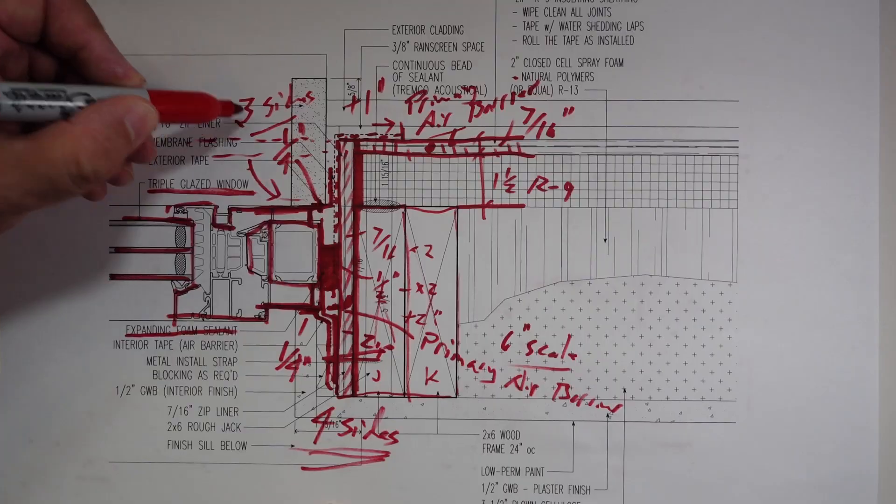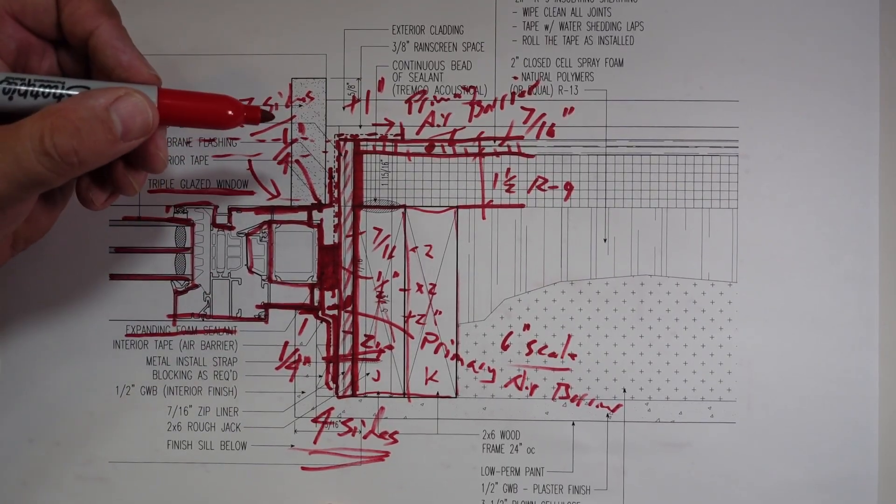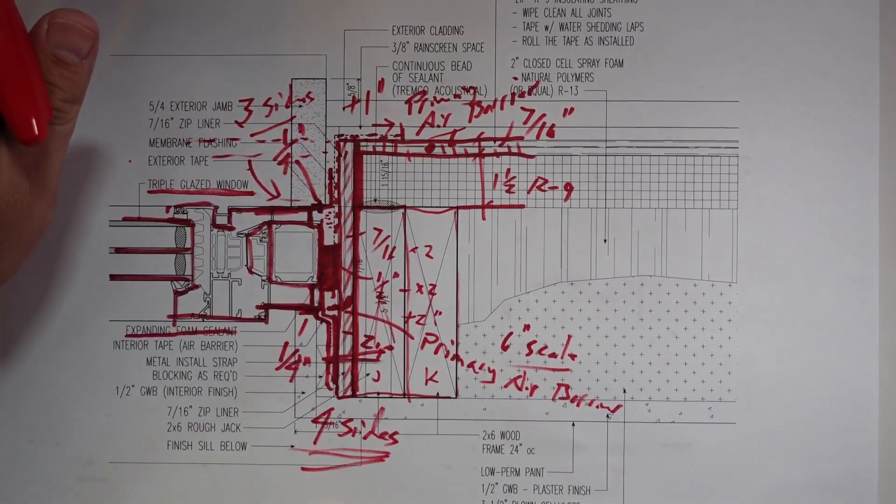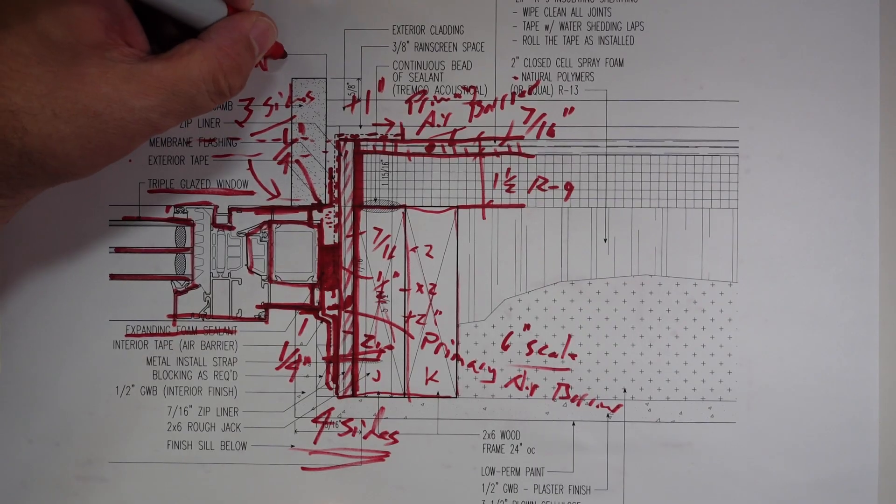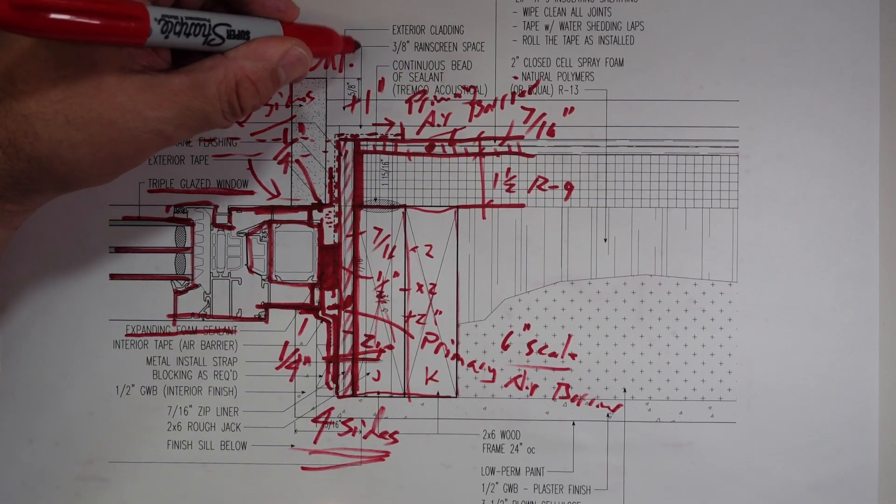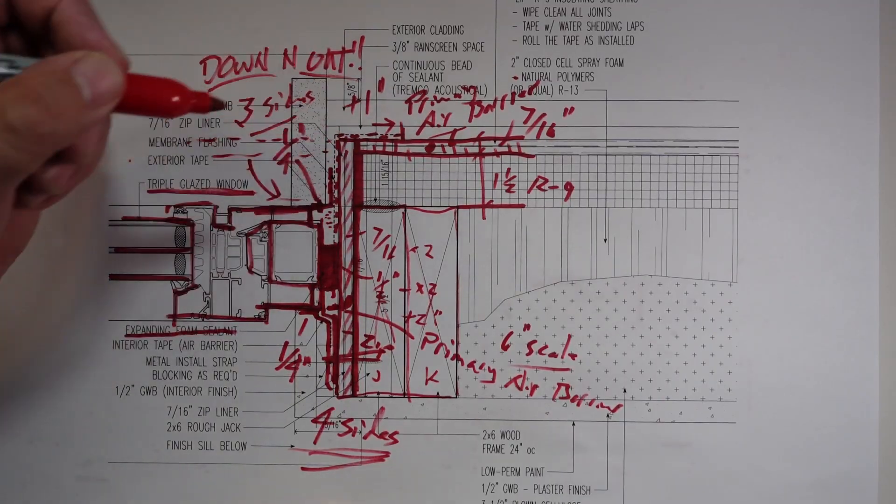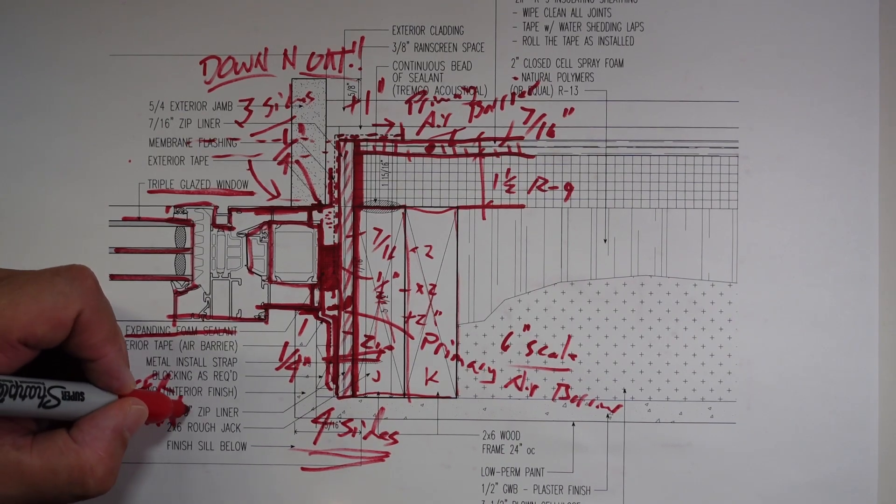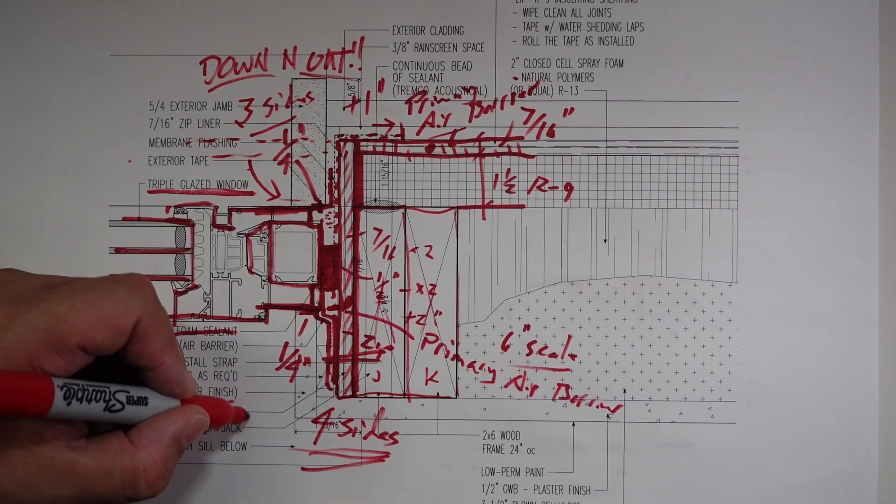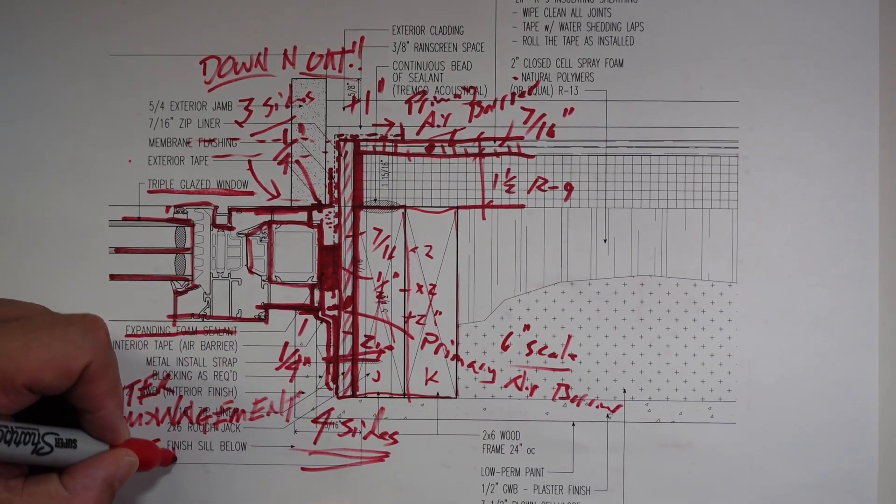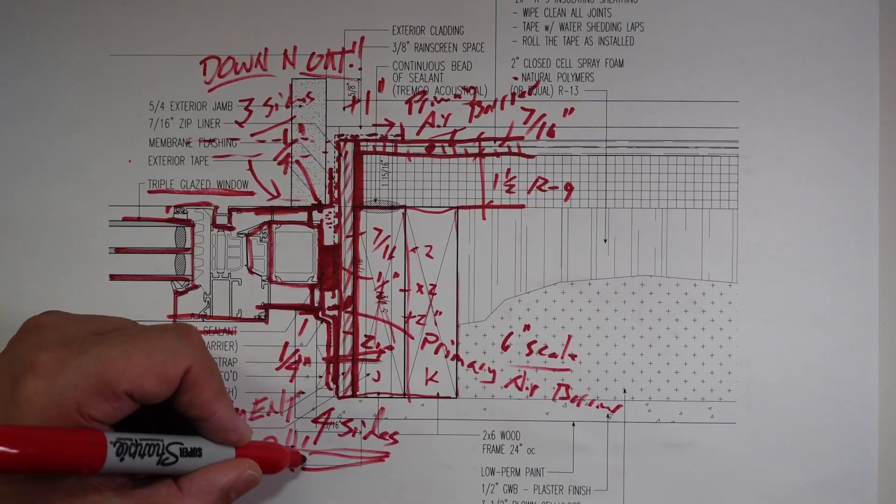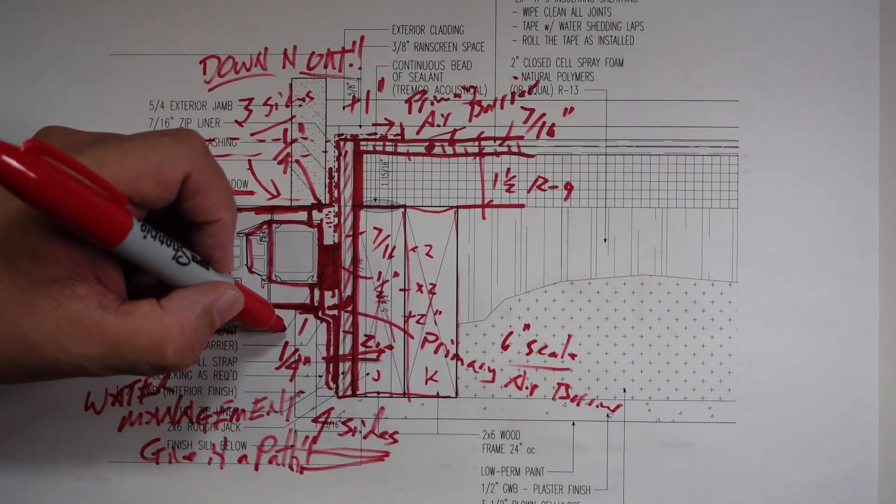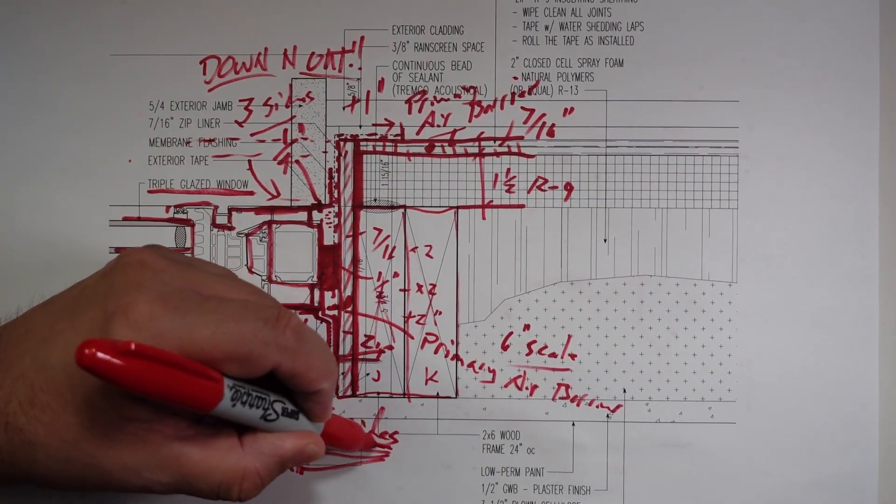I have some videos out there, go check it out where I talk about the rip sill and all of that. But basically if any water gets in here it wants to be able to go down and out. Remember what's our favorite two words for water management? Down and out. Water management, remember how many times I wrote this out and stressed it. It's not called water barrier, it's not called water stop, water management. What does that mean? Give it a path, give it a path, give it a path.